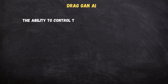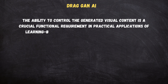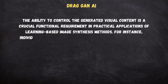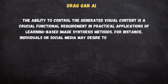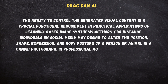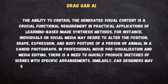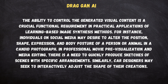The ability to control generated visual content is a crucial functional requirement in practical applications of learning-based image synthesis methods. For instance, individuals on social media may desire to alter the position, shape, expression, and body posture of a person or animal in a candid photograph. In professional movie pre-visualization and media editing, there is a need to quickly produce sketches of scenes with specific arrangements. Similarly, car designers may seek to interactively adjust the shape of their creations.